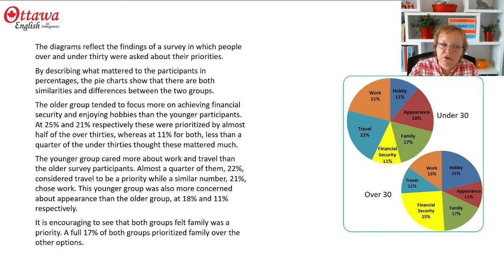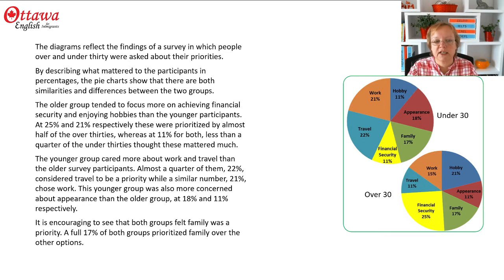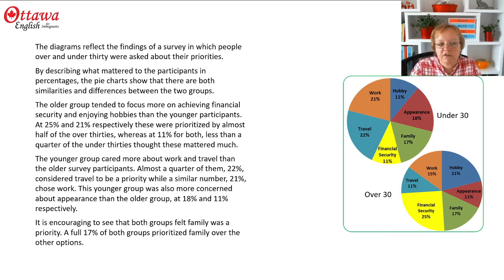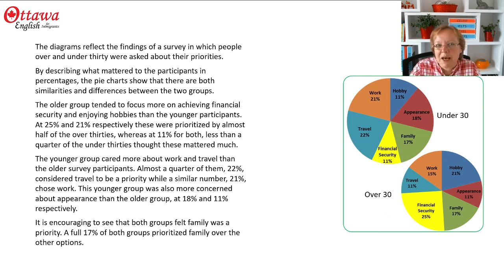The older group tended to focus more on achieving financial security and enjoying hobbies than the younger survey participants. At 25% and 21% respectively, these were prioritized by almost half of the over-30s, whereas at 11% for both, less than a quarter of the under-30s thought these mattered much.